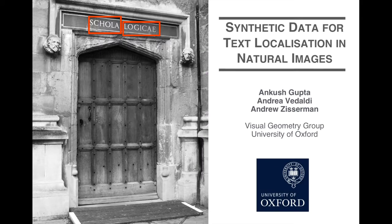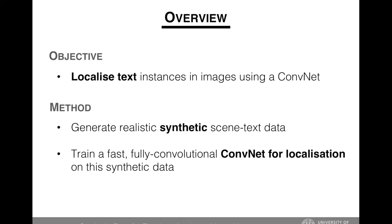Hi, my name is Ankush Gupta and I'm going to talk to you about our work on using synthetic data for localizing text in natural images. The objective of our work is to localize instances of text at the word level using a ConvNet. We approach this in two steps. First, we develop an automated engine to generate realistic-looking synthetic images with text in them, because existing scene text datasets are too small to train ConvNets. Second, we develop a fast, fully convolutional ConvNet to localize text at the word level, which outputs a bounding box for each word in the image.